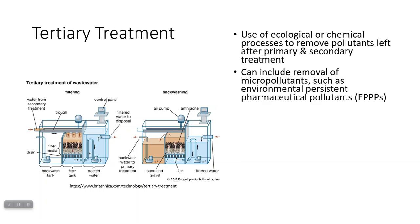Tertiary treatment can also address micropollutants, including environmentally persistent pharmaceutical pollutants — a fancy term for pharmaceutical drugs that don't come out of water very easily and are not taken out by conventional water treatment. These can be things like endocrine disruptors and other pharmaceutical drugs, and tertiary treatment options can help get rid of those from your water.